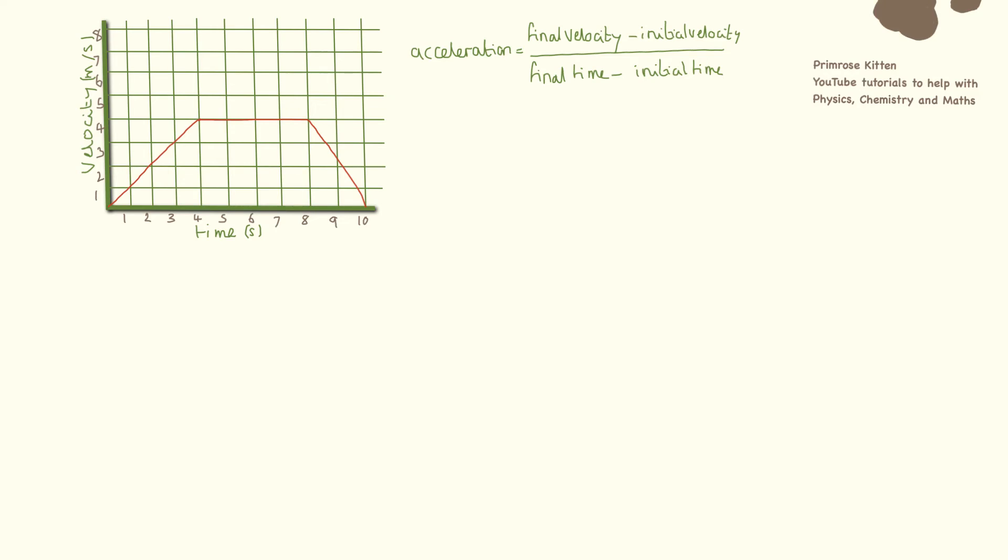So here is our graph. I am going to divide this into three sections: A, B, and C. We are going to work out the acceleration for each section. So our final velocity is 4, our initial velocity was 0, our final time was 4, and our initial time was 0. So there we were moving at 1 metres per second squared. That was our acceleration in that bit there.